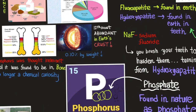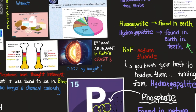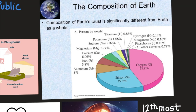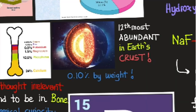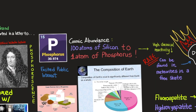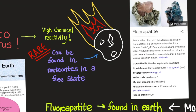Let's talk about phosphorus and its natural occurrences on earth and in the universe. According to a pie chart, phosphorus consists of 0.10% of the earth's crust. The main element that the earth's crust consists of is actually oxygen — a gas that makes up most of its structure. In terms of cosmic abundance, 100 atoms of silicon equate to one atom of phosphorus. Phosphorus has high chemical reactivity and is rarely found in its natural form — though it can be found in rare cases such as in meteor strikes on earth.